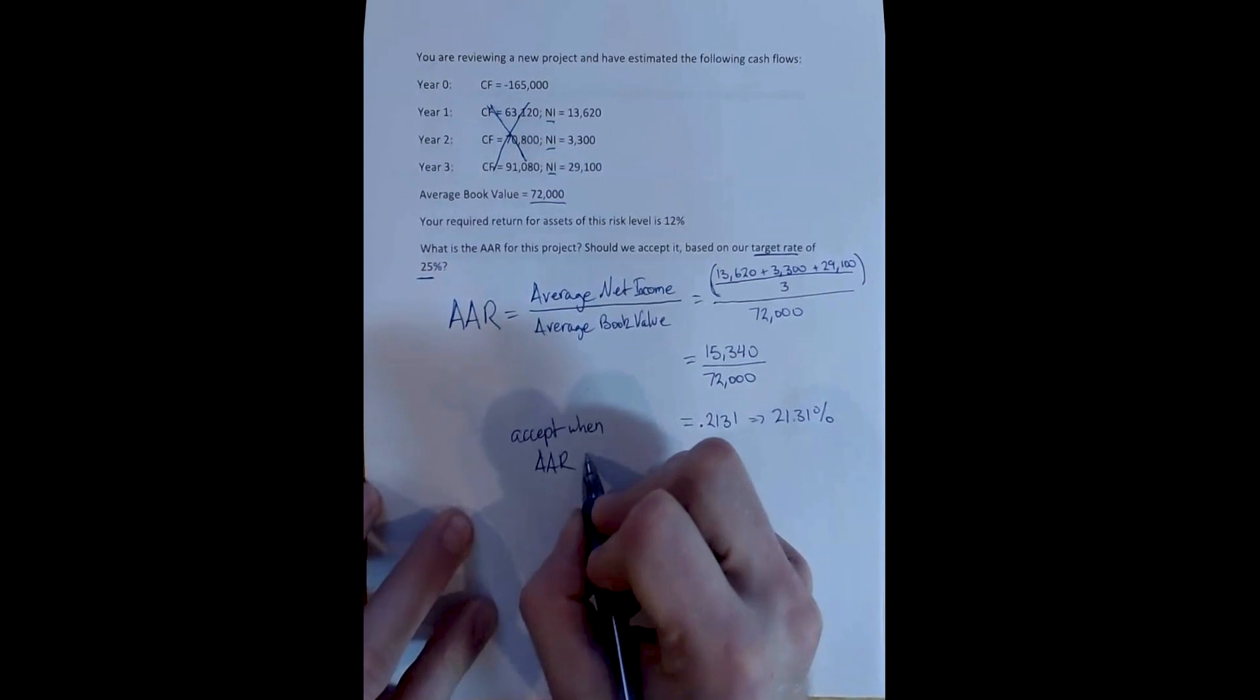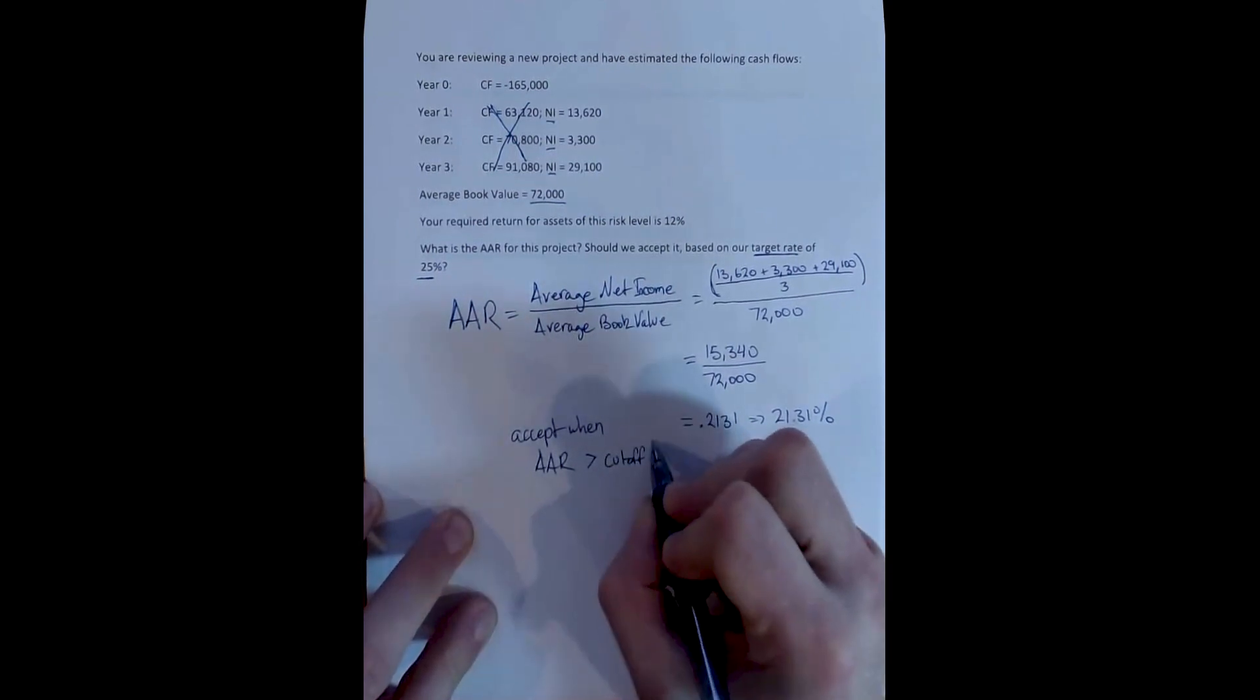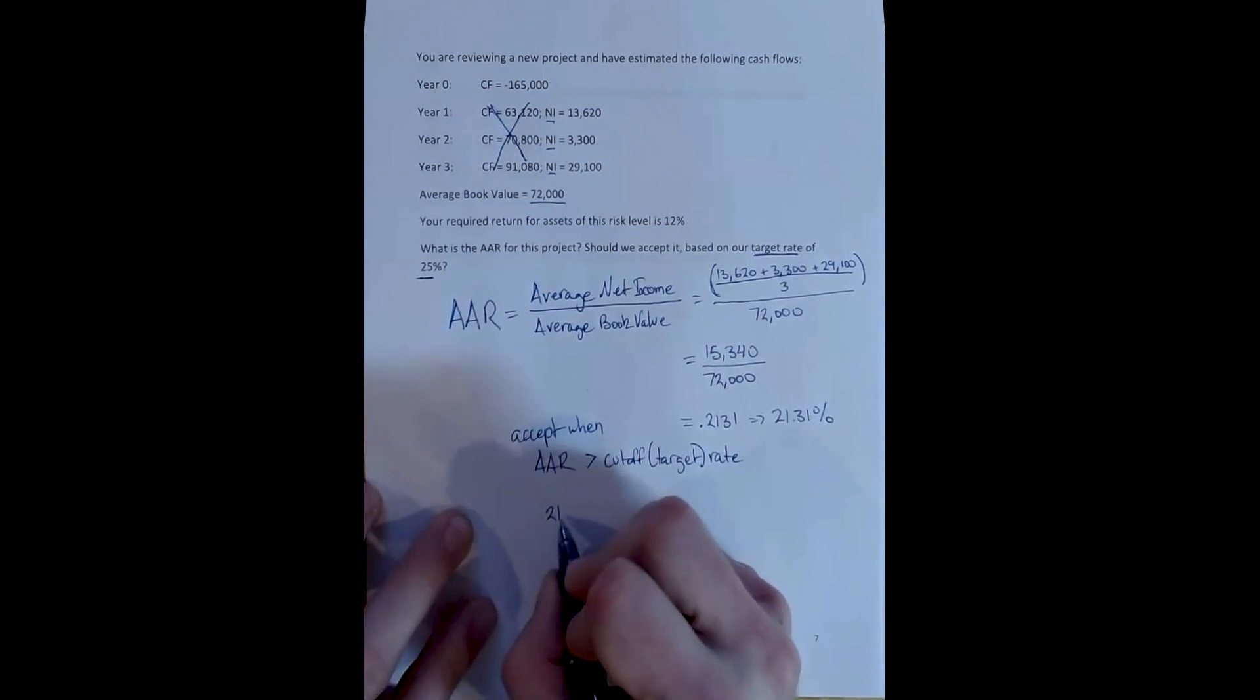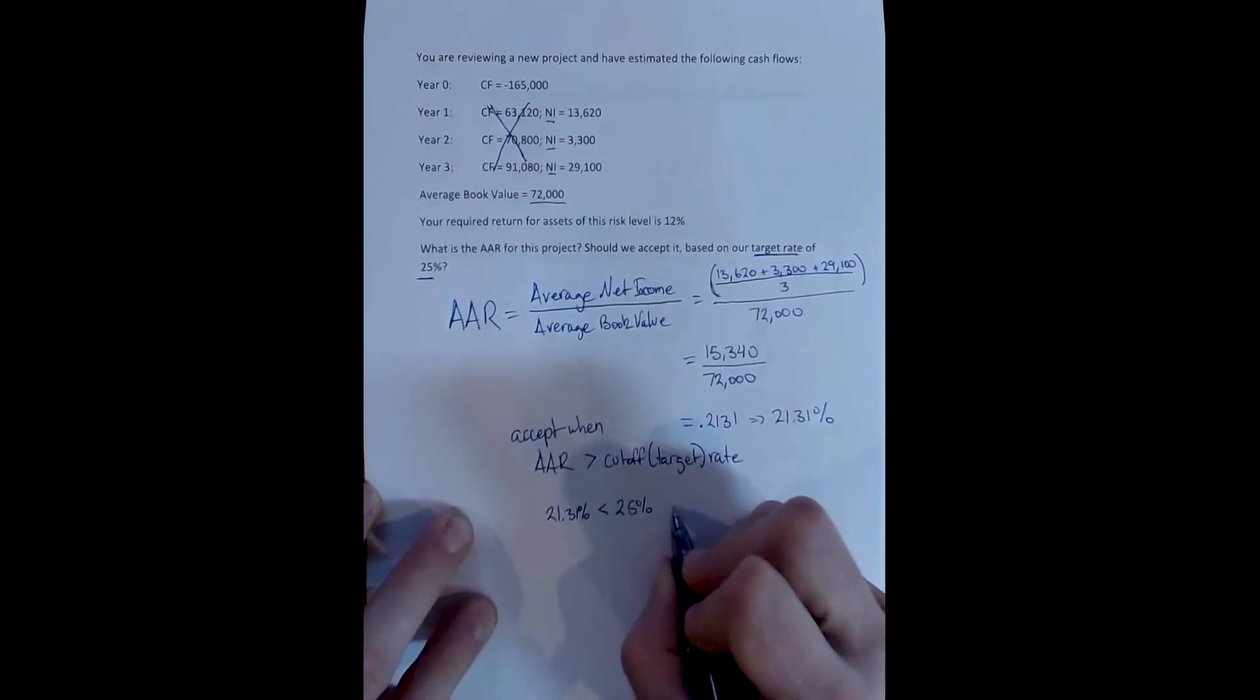So we accept the project when the AAR is greater than our cutoff, or our target rate. And in this case, that means we're going to reject this project, because 21.31% is less than our cutoff of 25%.